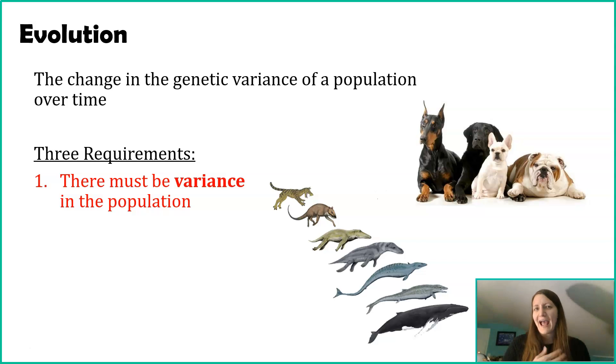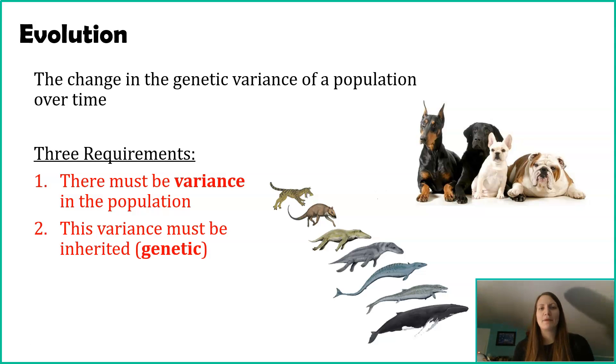If evolution is going to act on a population, there has to be variation in something. What that something is really depends on the population and the environment. Now whatever that variance is, if evolution is going to happen, that variance has to be inherited, or you could say it has to have a genetic component. This should hopefully make sense to you.